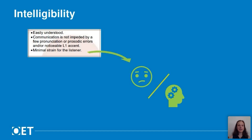Let's go through each of the criteria in turn. The first is intelligibility, which means your speech is easily understood with what is called minimal strain for the listener. The best way of explaining what strain looks like is a confused, puzzled expression. The patient or interlocutor might not always show this on their face — instead they might have a neutral expression but internally their mind is turning, trying to understand what you have said. Another indicator of strain is if the interlocutor doesn't answer the question as you expect, perhaps just saying 'yes' when they haven't understood.